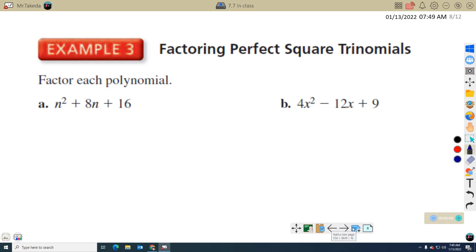Factoring perfect square trinomials, n squared plus 8n plus 16. Is this a perfect square? The square root of n squared is a perfect square. 16 is a perfect square. The square root of n squared is n. The square root of 16 is 4. 4n doubles as 8n. So, this is a perfect square trinomial. So, this will just work out to be n plus 4 quantity squared. For 4x squared minus 12x plus 4, the square root here is 2x. The square root here is 3. 2x times 3 is 6x. Doubled is 12x. So, this is also a perfect square trinomial. So, this factors to 2x minus 3 quantity squared. That's it. Pretty straightforward on this one.